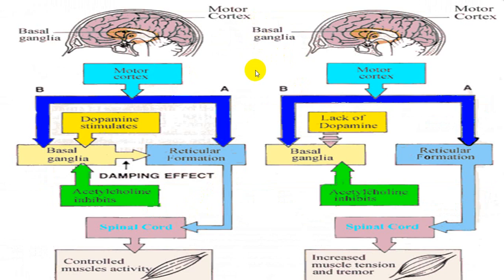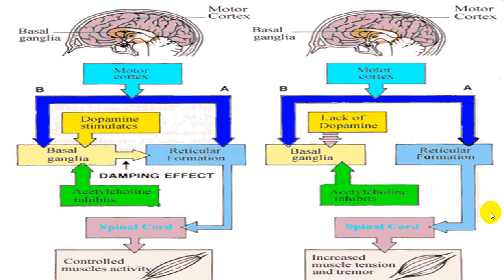Due to lack of dopamine, basal ganglia functions are affected. Acetylcholine inhibits input to the motor cortex, giving rise to involuntary movements. Reticular formation increases muscle tone and tremors, producing all four classical signs: resting tremors, rigidity, cogwheel rigidity, bradykinesia or akinesia, and postural instability.